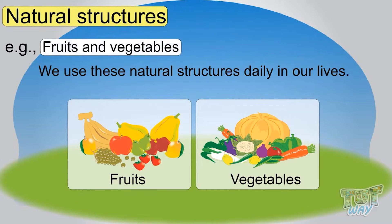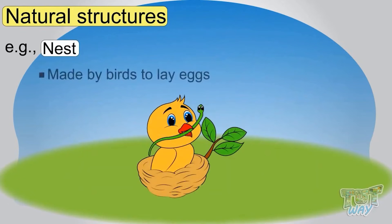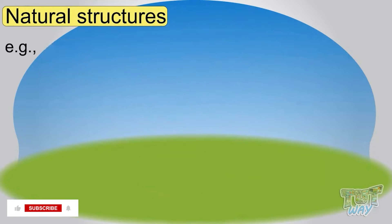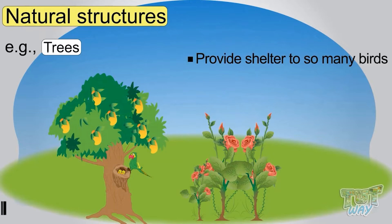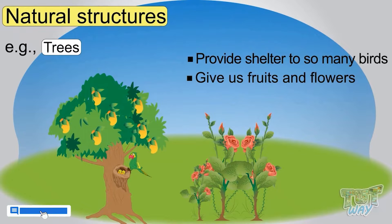Nest is a natural structure made by birds to lay eggs. Trees are natural structures that provide shelter to so many birds and also give us fruits and flowers. So we are surrounded by structures all around us, both natural and man-made.